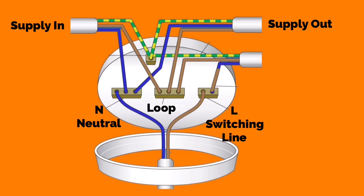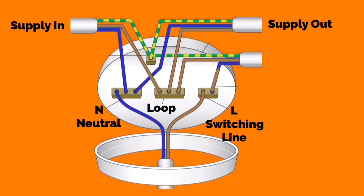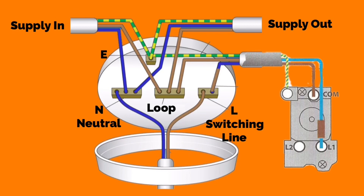If the supply comes in on the left hand side, it will bring in a permanent neutral connection terminated within the neutral block, a permanently connected line conductor connected into the loop terminal in the center, and a circuit protective conductor terminated into the earth connection within the ceiling rose itself. The bottom right hand cable is the one simulated to a switch drop.